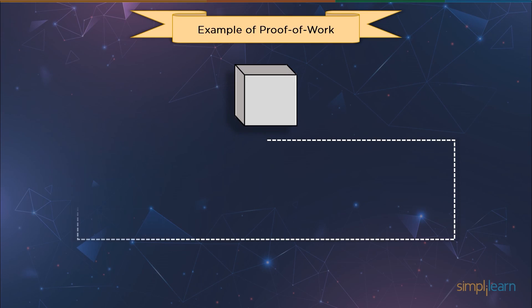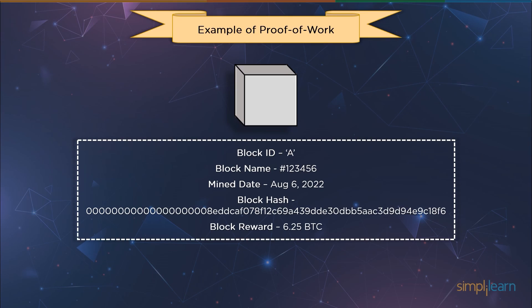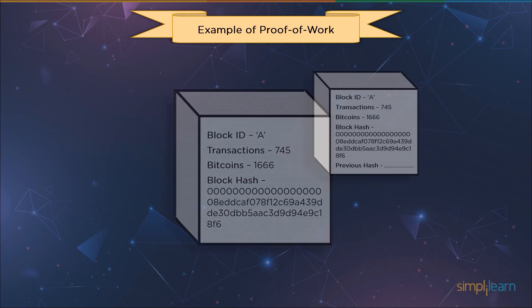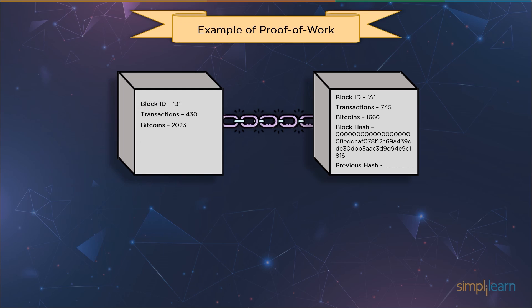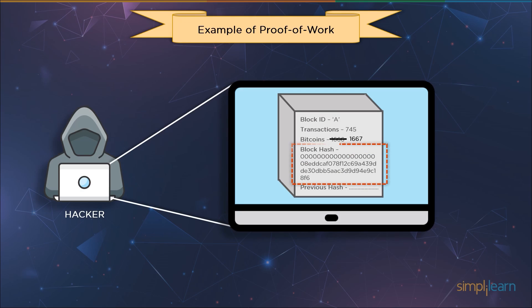A computer must randomly perform hashing operations until it generates an output with the required minimum number of leading zeros to provide proof of work. For example, the hash for block number 123456, mined on August 6, 2022, had a block reward of 6.25 BTC. That block will always have the header of the previous block and 745 transactions, totaling slightly over 1,666 BTC. The generated hash would be unrecognizable if someone attempted to alter a transaction amount by even one crypto coin, and the network would reject the fraud attempt completely.